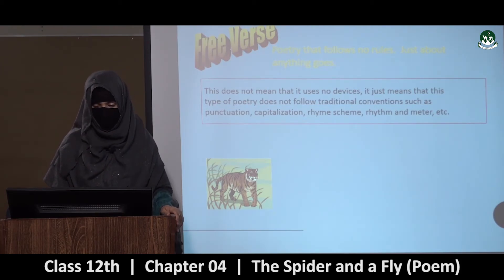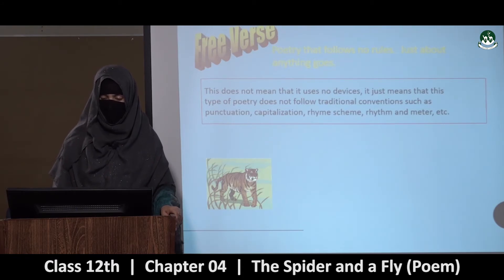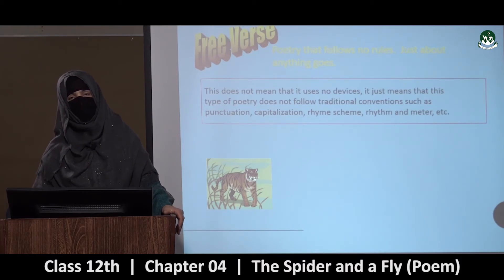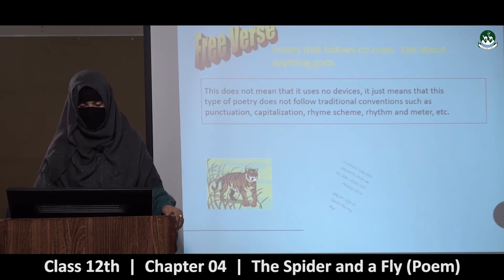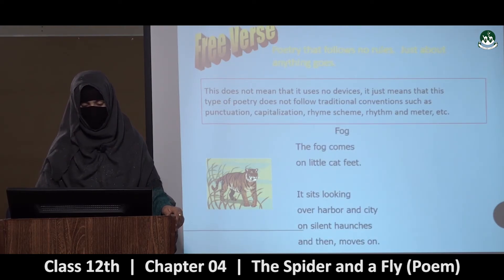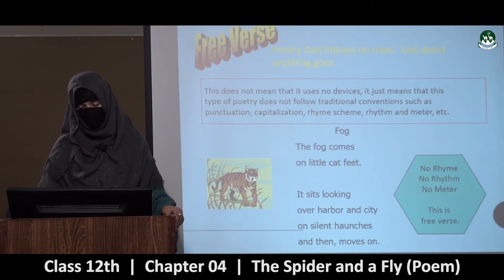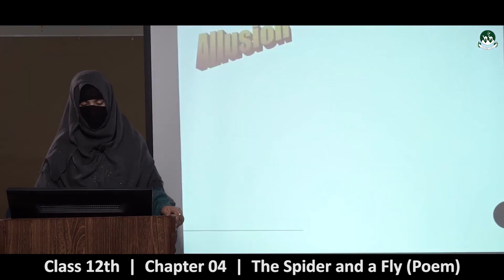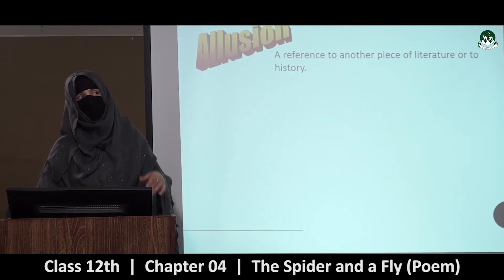Aur yeh jo free verse hai — free ke naam se ki isme aap apni marzi se chalte hain. Lekin aisa nahi hai ki isme devices use nahi hote. It just means that this type of poetry does not allow traditional conventions such as punctuation, capitalization, rhyme scheme, rhythm and meter — isme rhythm, meter, rhyme scheme yeh nahi hota. But still baqi jo conventions hain woh iske bhi hote hain. Example — 'The Fog': 'The fog comes on little cat feet, it sits looking over harbour and city on silent haunches and then moves on.' No rhyme, no rhythm, no meter — it is free verse.